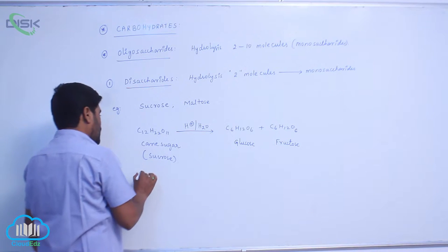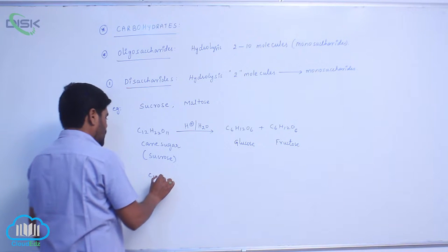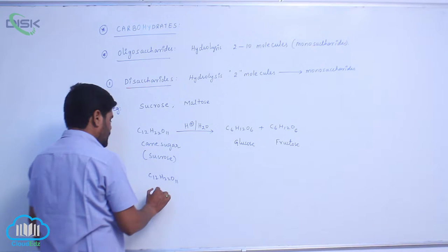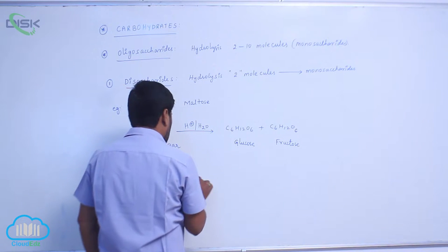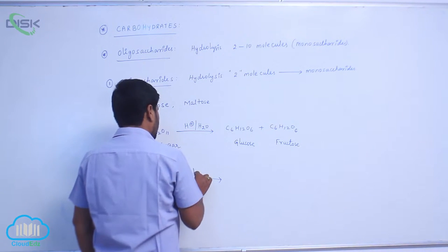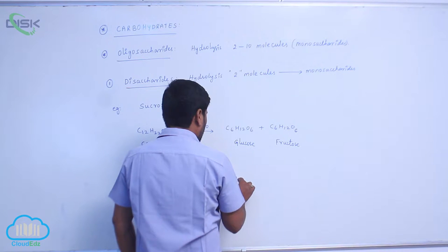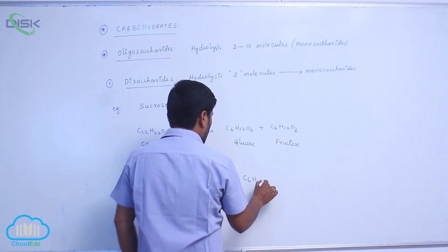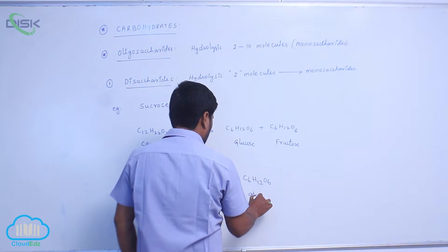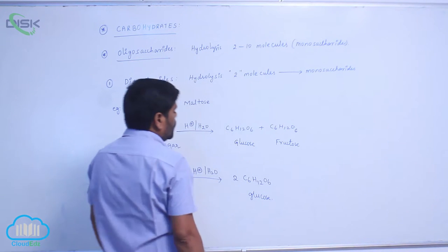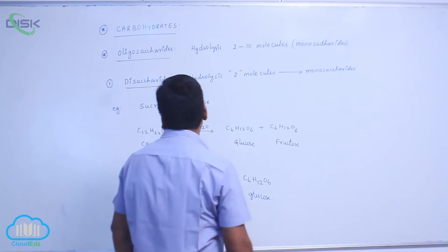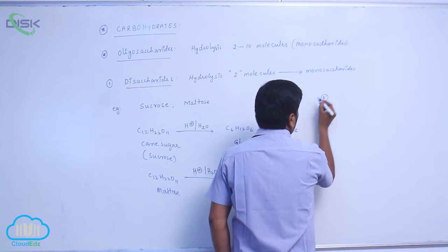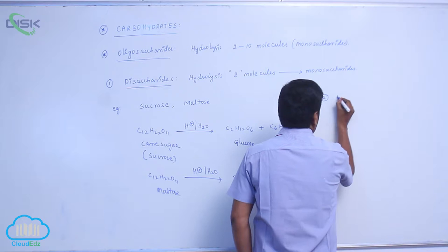The second example is maltose, C12H22O11, commonly known as malt sugar. On hydrolysis, maltose gives 2 units of glucose only. This concludes disaccharides. The second type is trisaccharide.